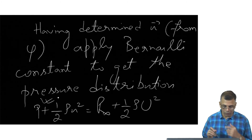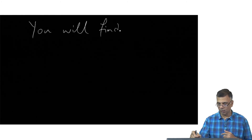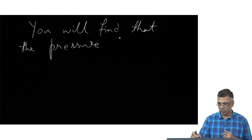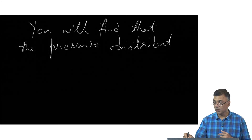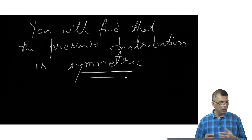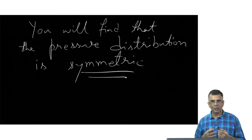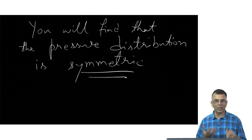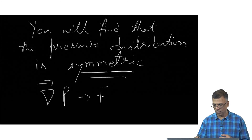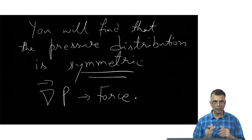If you do this, you will find that the pressure distribution over the entire surface is symmetric. In other words, there is no asymmetric pressure distribution — the pressure in the front is not different from the pressure at the back. Only if the pressure distribution were asymmetric would there be potential for a drag force. The gradient of pressure is what gives you a force, and if the pressure distribution is completely symmetric around a body, there is no scope for force.